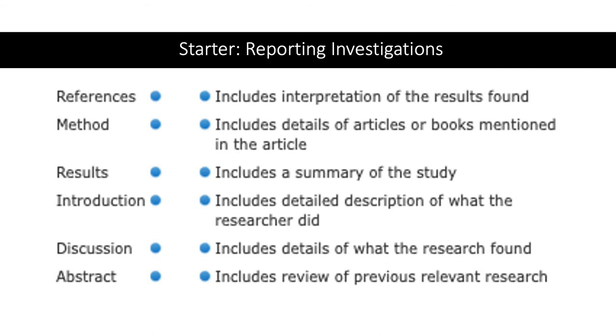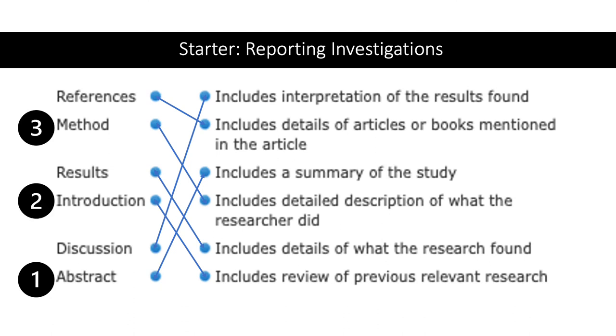So, firstly, our references section includes details of articles or books mentioned in the article. So, we have to let the reader know where we have got our information from. Then we have our method, which is a detailed description of what we did or the researcher did. Then we have our results, and this includes details of what the research found, including any inferential statistics that we did. Then we have our introduction, which is just a review of previous relevant research. Our discussion is our interpretation of the results found. So, what is the conclusion? What are the implications of it? Are there any practical applications, etc.? And then finally, we have our abstract, which includes a summary of the study, including all of the sections, apart from your references section. And the order that they go in is, one, we have our abstracts, then we go into our introduction, we then talk about our methods, then what we found, then we discuss what we found, and then we reference.